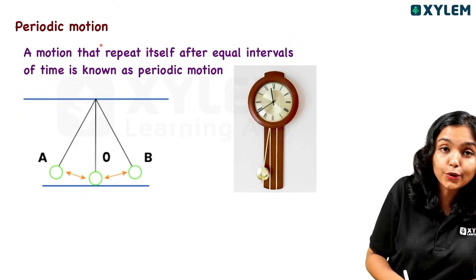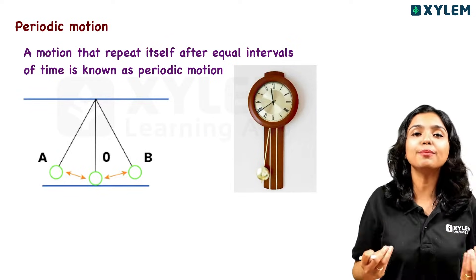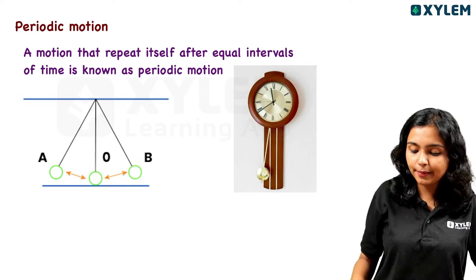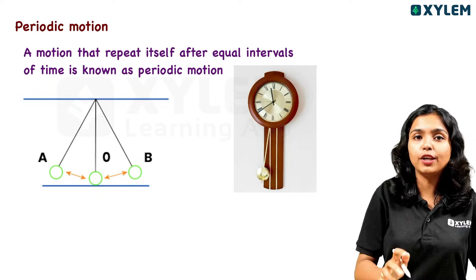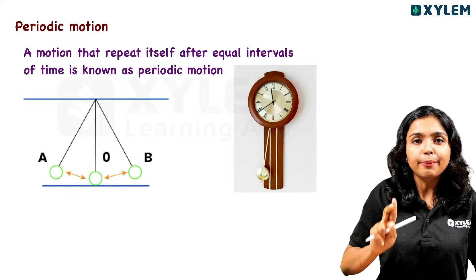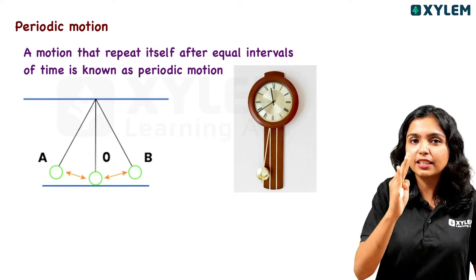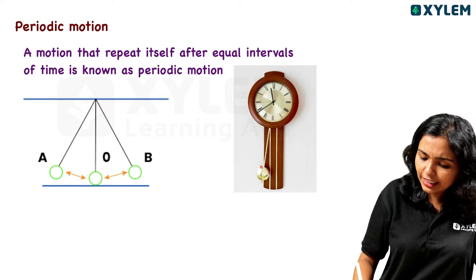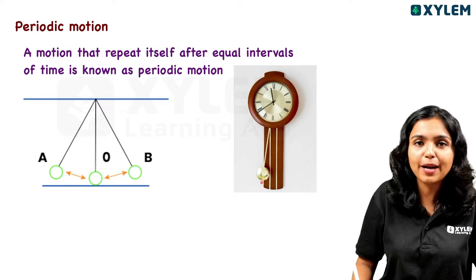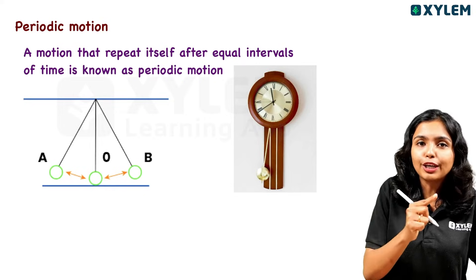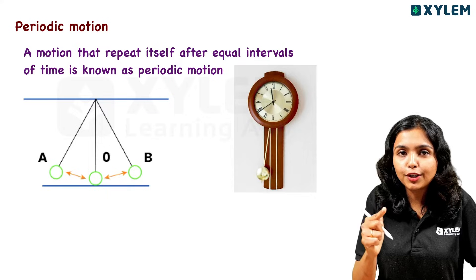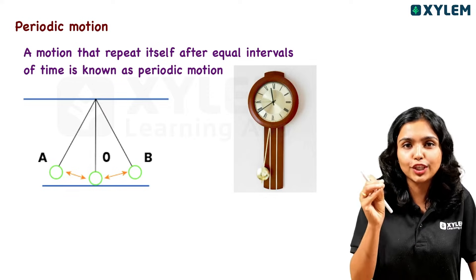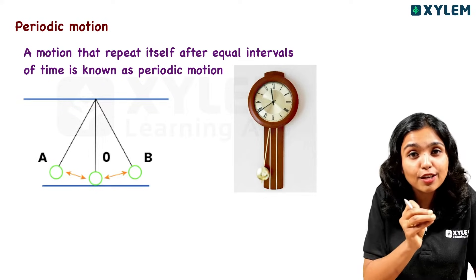The next motion is the periodic motion. When you say a period — the motion of a wall clock pendulum moving between two end points. From the pendulum, you can hear tick, tick, tick, tick. If you want to use regular intervals of time, you can use regular intervals of time.